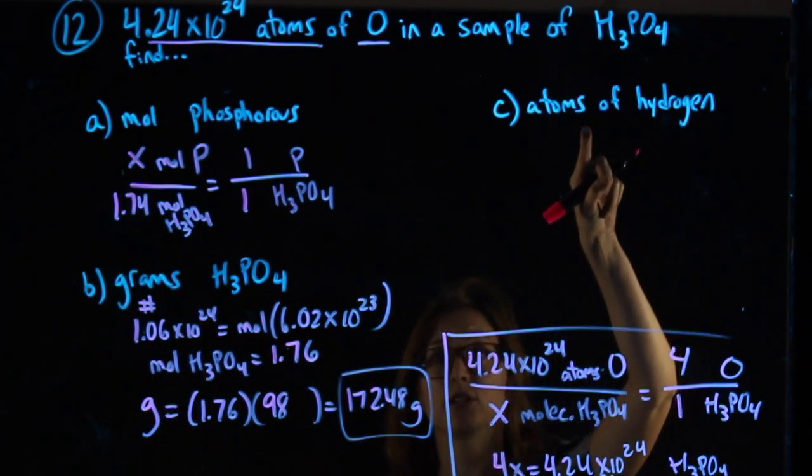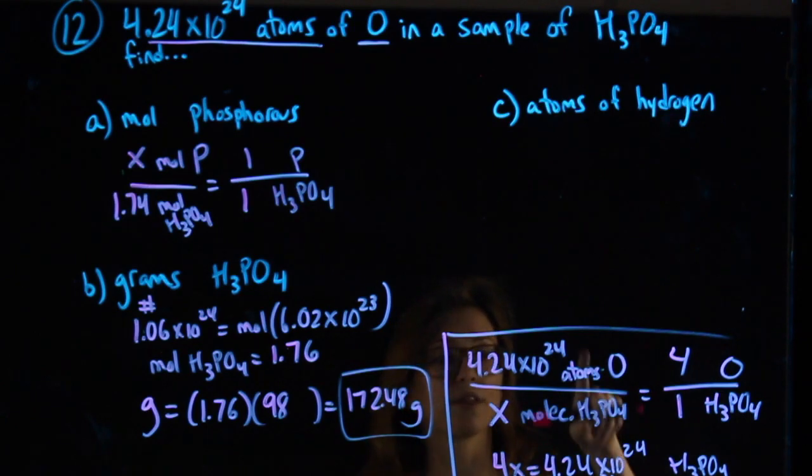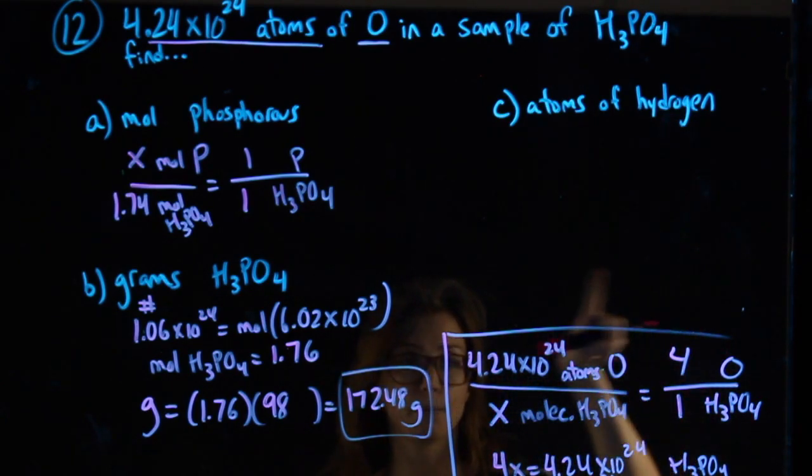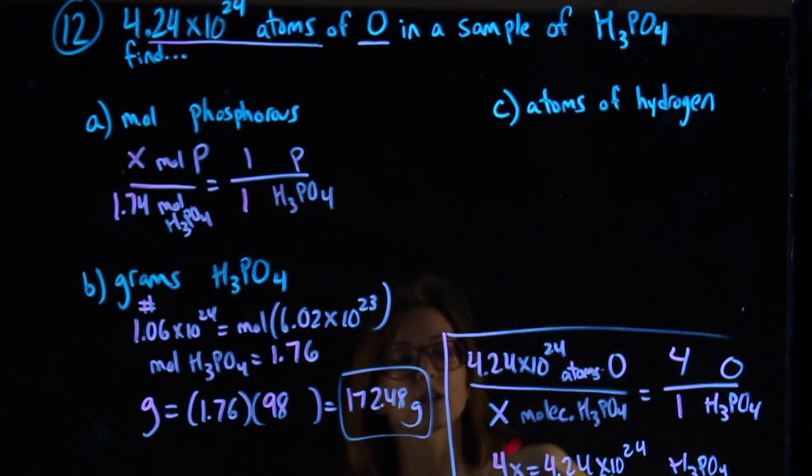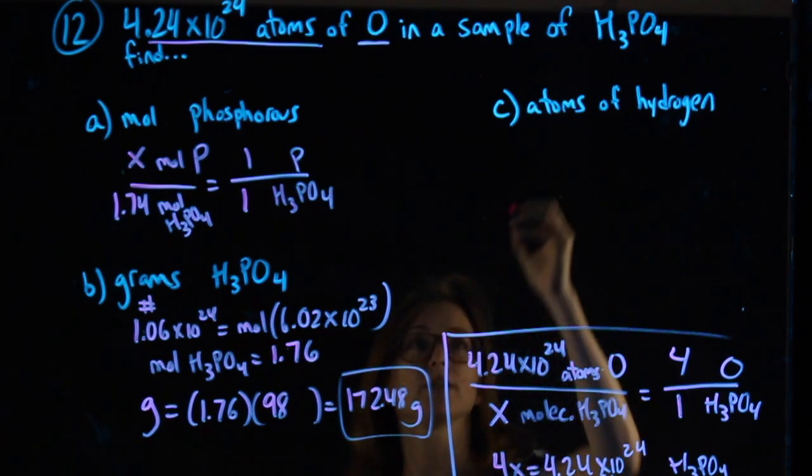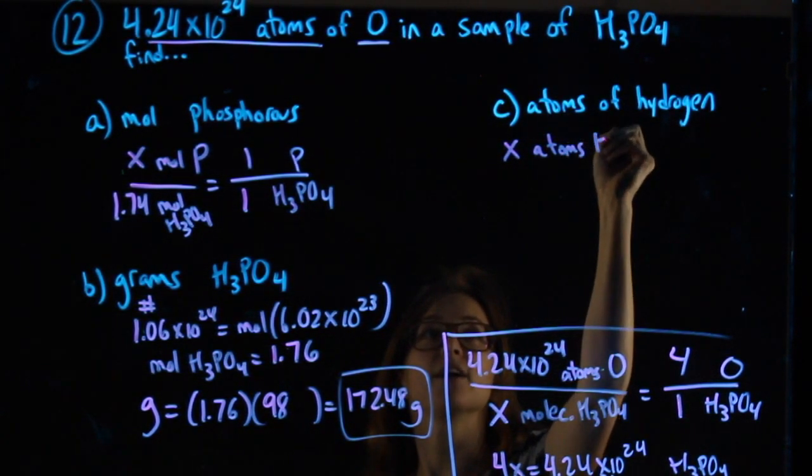For atoms of hydrogen, I'm going to use the molecules I have for the whole thing, basically setting this up again. But instead of using oxygen, I'm going to adjust it and use hydrogen. I want to know my atoms of hydrogen.